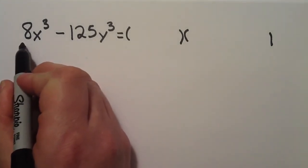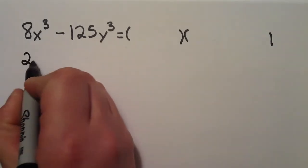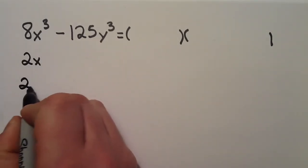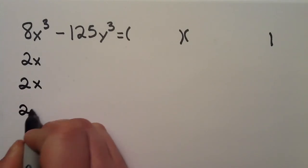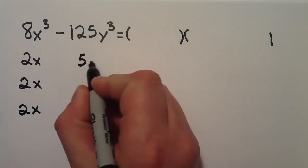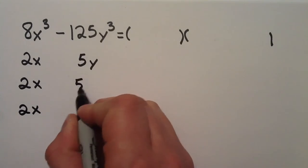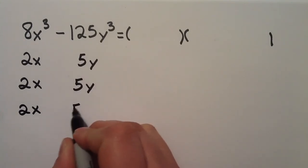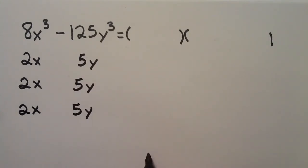Three things that multiply to give me 8x cubed. 2x, 2x, and 2x. Three things that multiply to give me 125y cubed. 5y, 5y, and 5y.